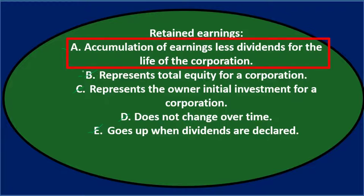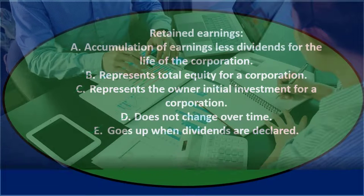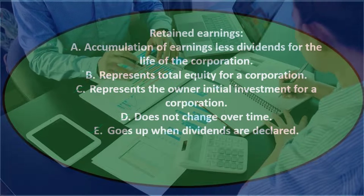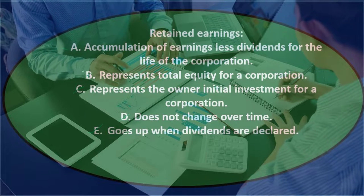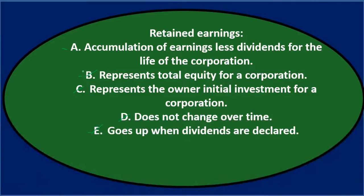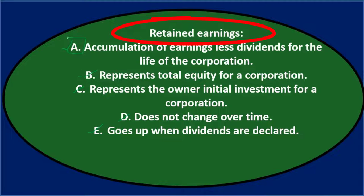Also A is the longest answer, and oftentimes if you see a long, detailed answer that hedges all its bets and is very precise about saying exactly what is correct without missing anything, that may be more likely to be the answer. This is the most correct answer — though note something like a stock dividend could also affect retained earnings. Final answer: retained earnings — A, accumulation of earnings less dividends for the life of the corporation.